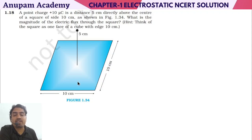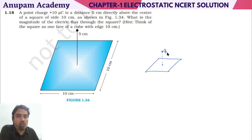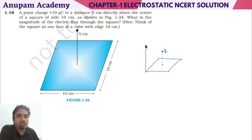First of all, we will design a cube from this surface. So this is our square, and this is our center at 5 cm distance. If we have a charge here, we will design a cubical Gaussian surface around it.